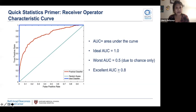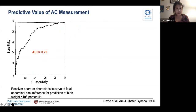A receiver operator characteristic curve is a graphical plot used to show the diagnostic ability of a test. The x-axis is the false positive rate, or one minus specificity, and the y-axis is the true positive rate, or sensitivity. What matters here is how much area is under the curve, or the AUC. The ideal curve fills in 100%, meaning you can distinguish between negative and positive results 100% of the time — which is almost impossible in real life. An excellent AUC in real life is greater than or equal to 0.8. The authors of David et al. created an ROC curve for abdominal circumference for prediction of birth weight less than the 10th percentile and found it performed well with an AUC of 0.79.